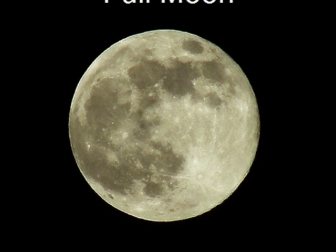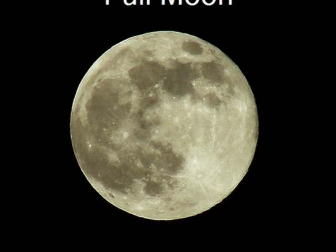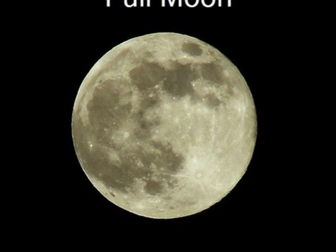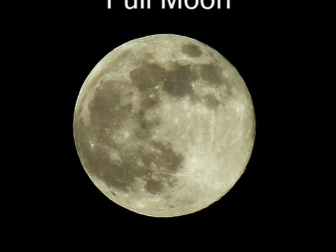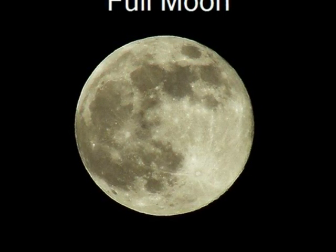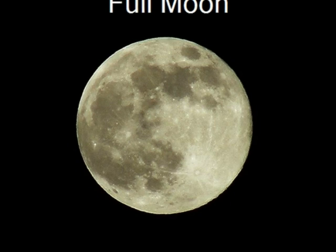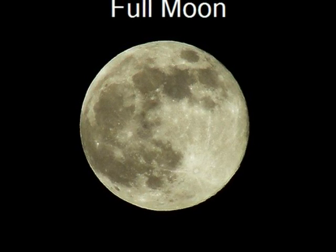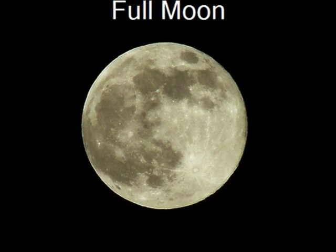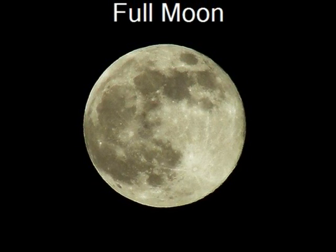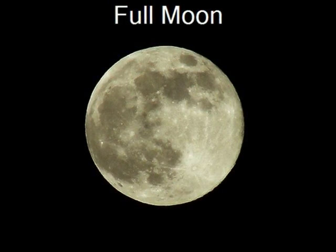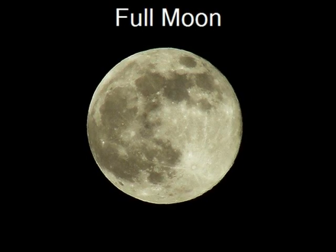We are now halfway through the Moon's phases. We will now look at the full Moon. This phase happens when the Earth is between the Moon and the Sun. During a full Moon, the Moon appears fully lit by the Sun.